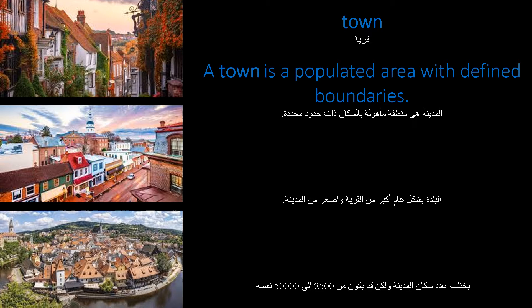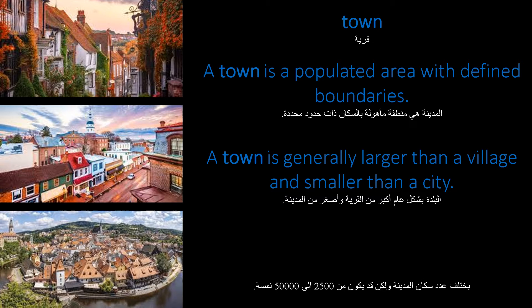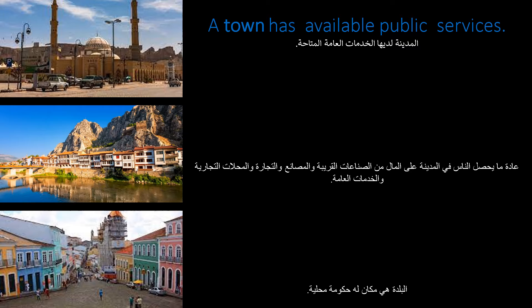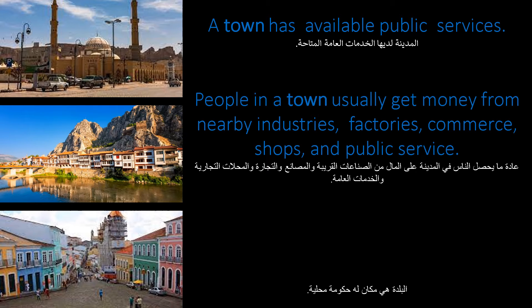A town is a populated area with defined boundaries. A town is generally larger than a village and smaller than a city. The population of a town varies but may be from 2,500 to 50,000 people. A town has available public services.